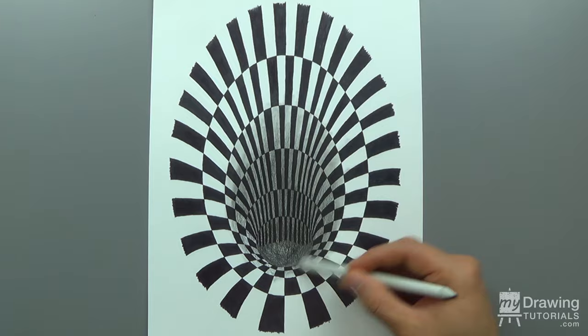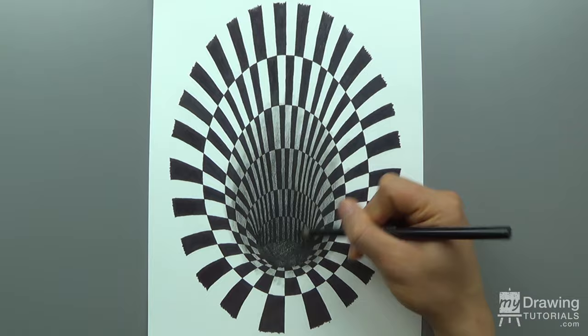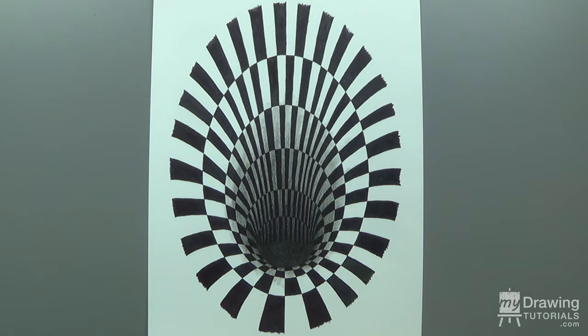And I'll use a blending stump to smooth out the tone. And now I'll use a charcoal pencil to put in a really dark layer for the hole.